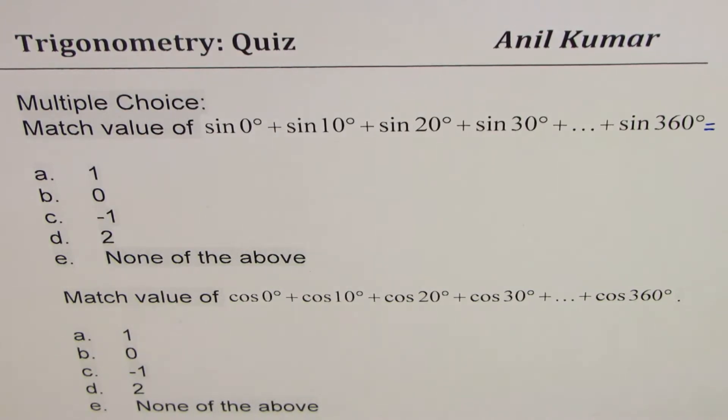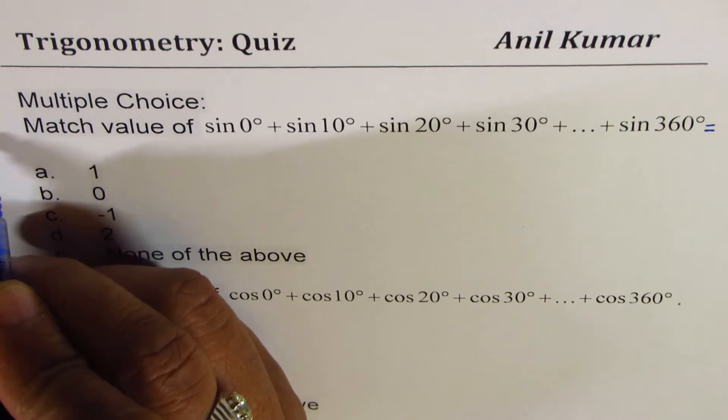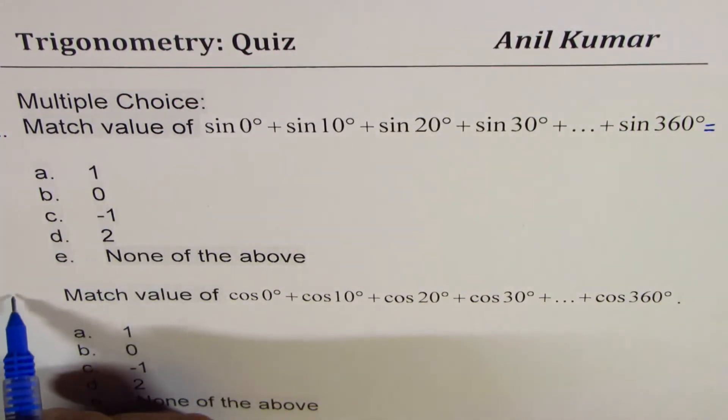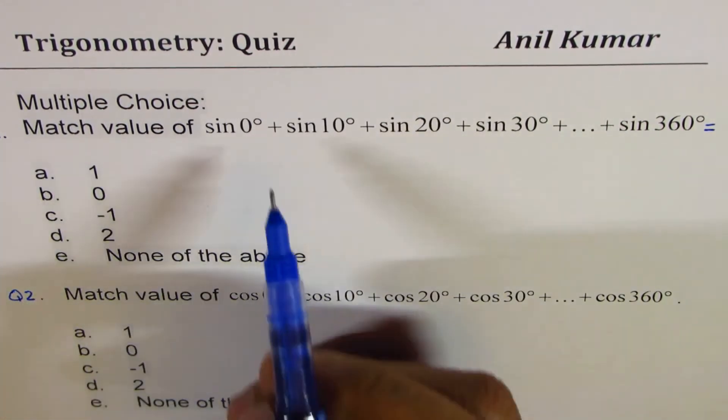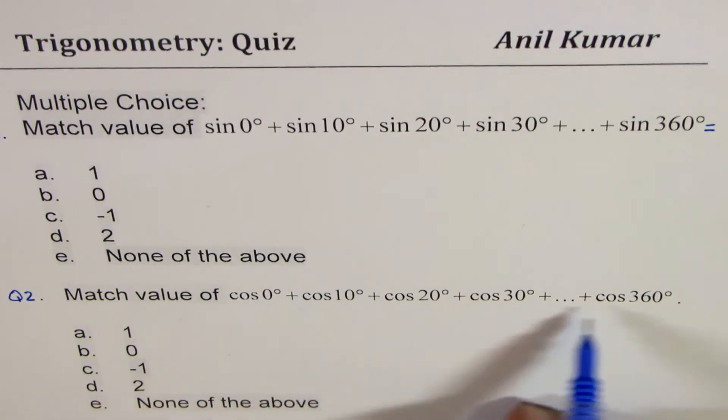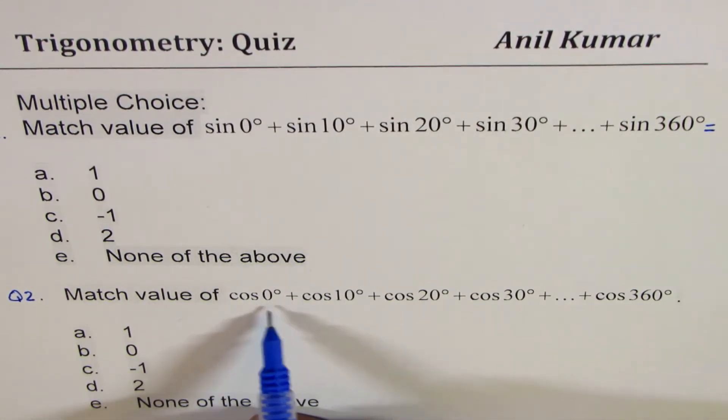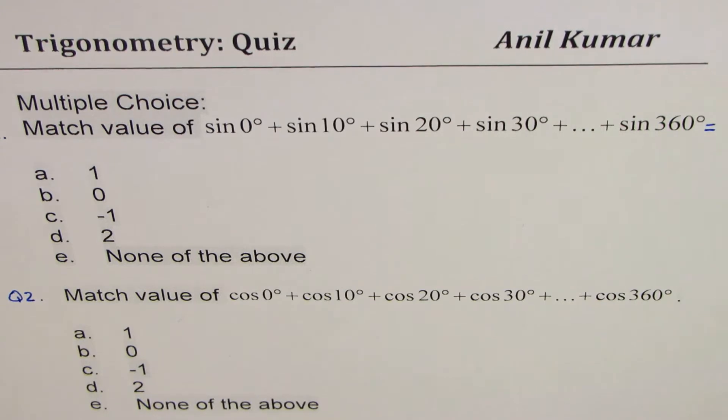You can pause the video, answer the question, and then look into my suggestions. So we have part 2 of this. Let's call it question number 1. And here we have question number 2. I have replaced sine with cosine. The same thing, sine when replaced with cosine will give you what result?